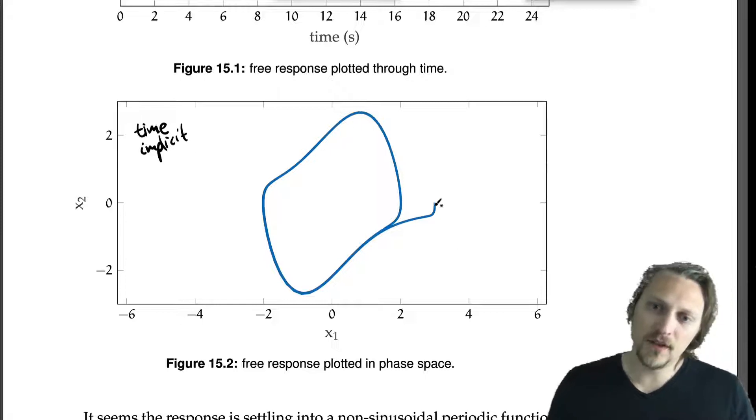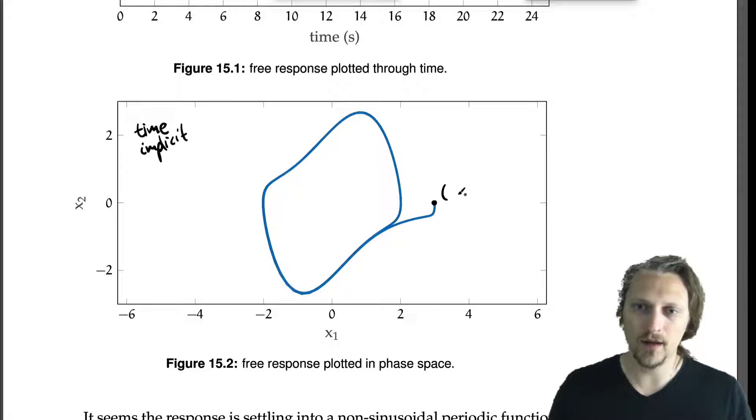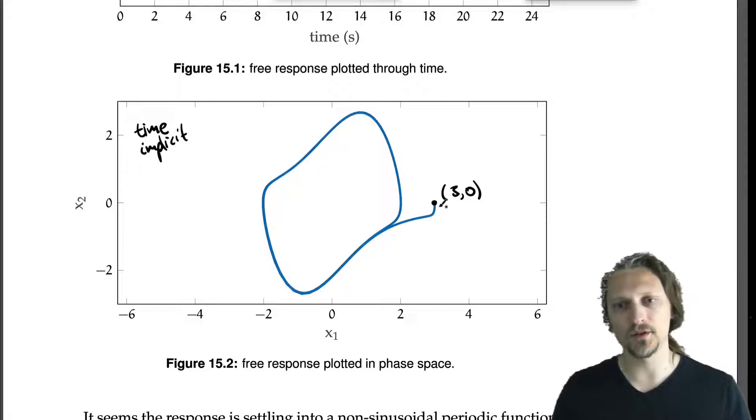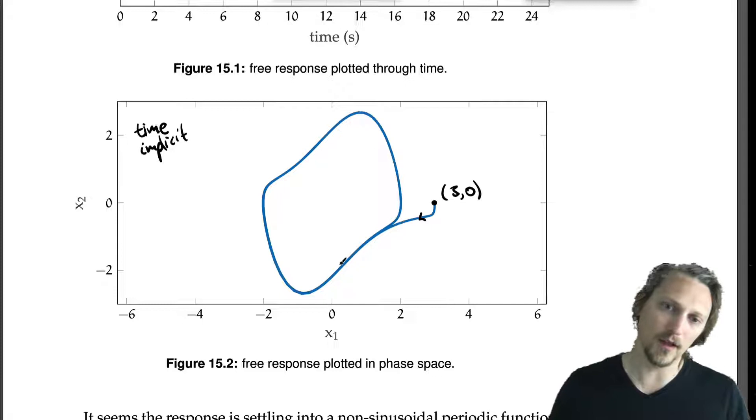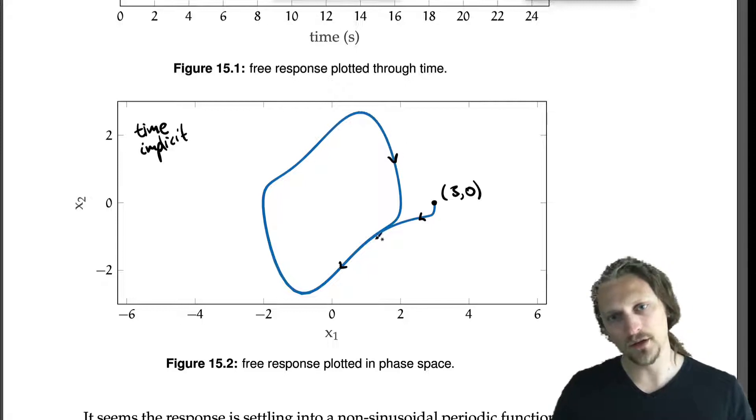So we started out at x₁ = 3 and x₂ = 0—that was our initial condition—and then as we evolve this in time, we move along here and we go around in this sort of beautiful loop, and we start to return and just cycle around here repeatedly over and over again.